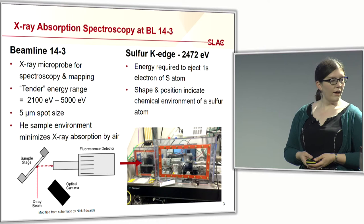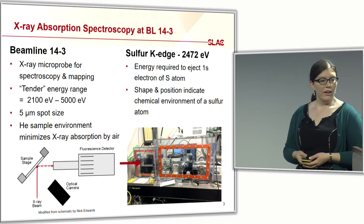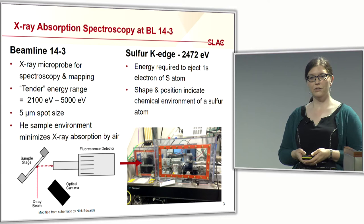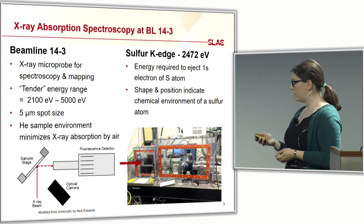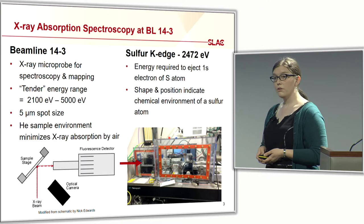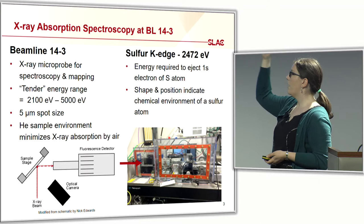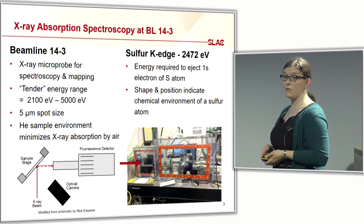All of my experiments are done at the sulfur K edge, which is 2472 eV. This is the energy required to eject a 1s electron of a sulfur atom. The shape and position of the resulting spectra indicate the bonding environment of the sulfur atoms in your material of interest. On the left-hand side is a schematic of the sample setup: the X-ray beam comes in, hits your sample, and the outgoing beam goes into a fluorescence detector. The schematic on the right shows what the beamline itself actually looks like, with the sample sitting where the red arrow is.